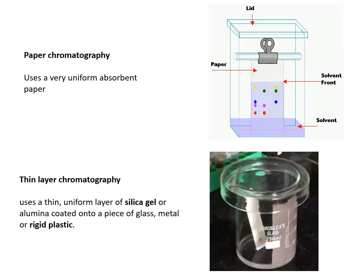Two techniques that you will use: first, paper chromatography, which uses a special, very uniform absorbent paper if you want good results. Second, thin layer chromatography (TLC), which uses a piece of plastic coated with silica gel on one side — the material gets soaked up through the silica gel.